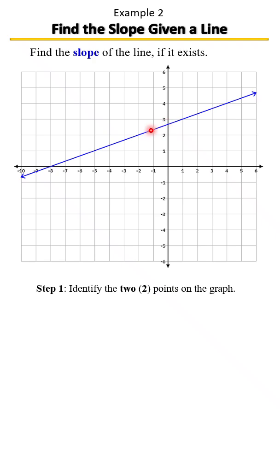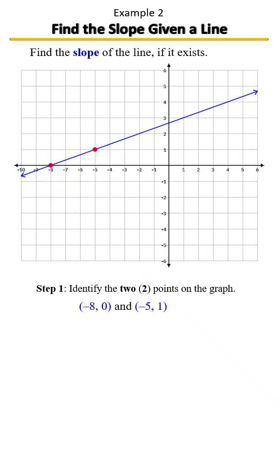Here we have a point we could use: negative 2, 2, or we could also use negative 5, 1. Let's go ahead and pick two points on our graph. We're going to go with negative 8, 0 and negative 5, 1.